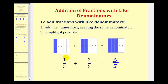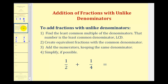It's important to understand this idea because to add fractions with different or unlike denominators, the first step is to find the least common multiple of the denominators. This is called the least common denominator, or LCD. Once we identify the LCD, we're going to create equivalent fractions with the common denominator, and then once we have the same denominators, we'll add the numerators, keeping the denominators the same, and as always, simplify if possible.